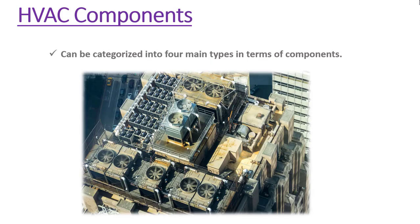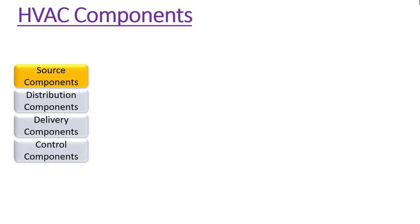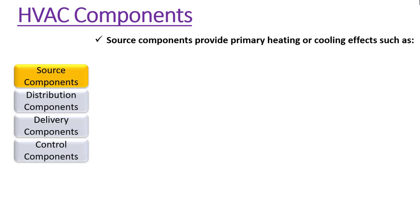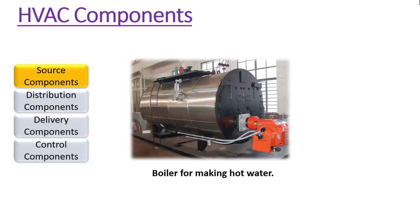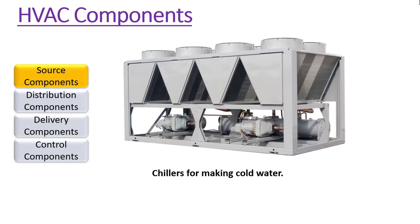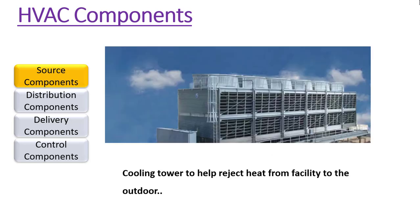HVAC can be categorized into four main types in terms of components. Source components provide primary heating or cooling effects. These include direct expansion coils for cooling the air, boilers for making hot water, chillers for making cold water, and cooling towers to help reject heat from the facility to the outdoor.